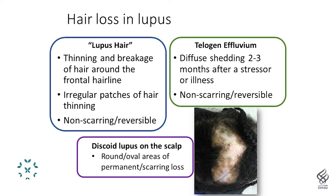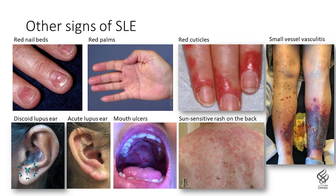That's in contrast to discoid lupus of the scalp, which is part of chronic cutaneous lupus. When you get these lesions on the scalp, the inflammation goes all the way down to the root of the hair and attacks so exuberantly that the hair falls out and will not grow back. Other signs of systemic lupus include red nail beds, bright red palms, and very red cuticles. We see spots on the ears; discoid lupus can be inside the ears. People can get ulcers in their mouth when systemic lupus is flaring, and often very sun-sensitive rashes. A skin biopsy can often tell the difference, and there can even be vasculitis in patients with lupus.